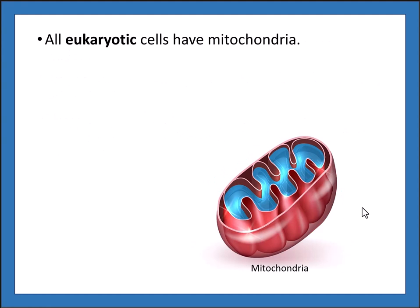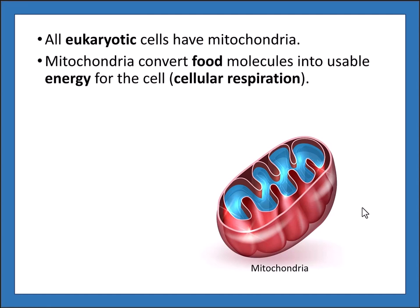All eukaryotic cells — plants, animals, fungi — have mitochondria. It's easy to think plant cells have chloroplasts and animal cells have mitochondria, but plant cells actually have both. Mitochondria convert food molecules into usable energy for the cell — the chloroplast makes sugars, but the mitochondria break those sugars down. That process is known as cellular respiration, and we'll talk more about that later.